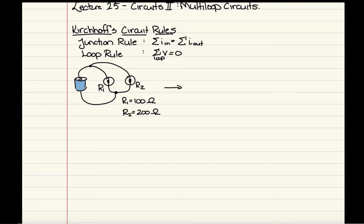Anything connected by a perfectly conducting wire is going to be an equal potential surface. Coming out of the positive end of the battery, both wires I've drawn in red are an equal potential surface. Similarly, at the negative end of the battery, that is all an equal potential surface. When I represent this as a circuit diagram, I'll just call the light bulbs resistors: R1, R2, and the battery voltage V, which we'll take as 9 volts.